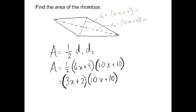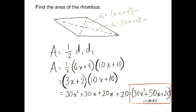Now we need to FOIL first outer, inner, last our two polynomials here so that we can get an answer. So I get 30x squared plus 30x plus 20x plus 20. And now I need to simplify by combining like terms. And my final answer is 30x squared plus 50x plus 20, all in parentheses inches.